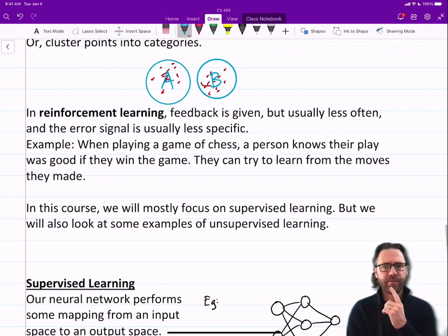So for example, when playing a game of chess, a person knows their play was good if they win the game. They can try to learn from that game, think about the different moves that they went through. And I just finished watching The Queen's Gambit—great series. But there's no specific error signal in the sense of no specific evaluation of each move as they went through the game.